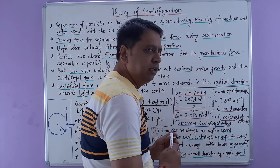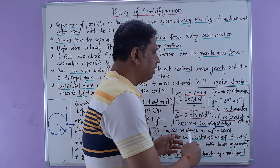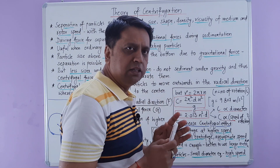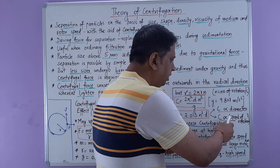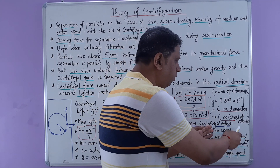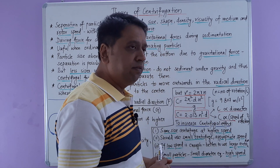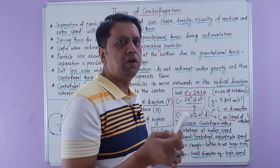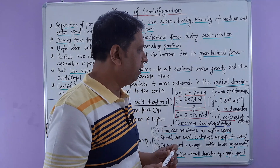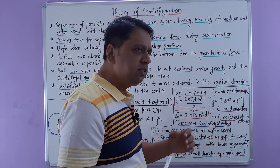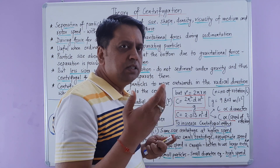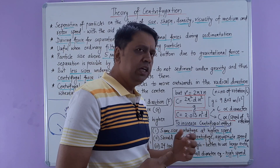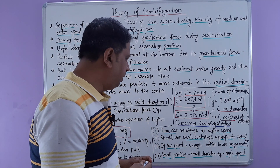This equation shows that the centrifugal effect is directly proportional to the diameter d of the circular path of the particle, and also directly proportional to the square of the speed of rotation n. This means the effect of speed of rotation is more significant compared to the effect of diameter. Therefore, increasing the speed is the most effective way to increase centrifugal effect and centrifuge efficiency.